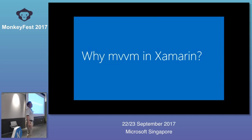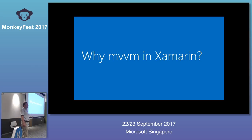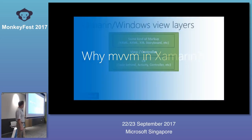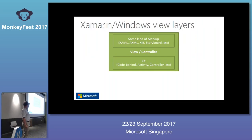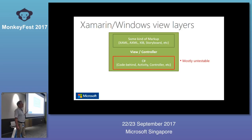Why would you want to use MVVM in Xamarin? Out of the box you get MVC, which is a proven pattern. But the controller is very, very difficult to unit test, because the controller is going to interact directly with the view. For example, you'll have a button.click event handler — that's not something you can easily simulate in a unit test. If you want to show a message box, how do you do that in a unit test? It doesn't work.